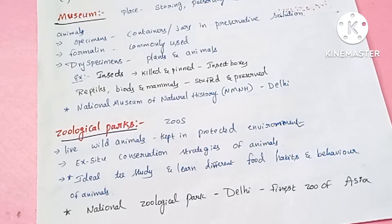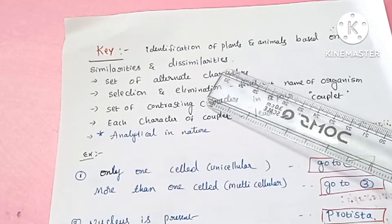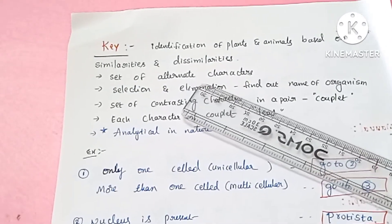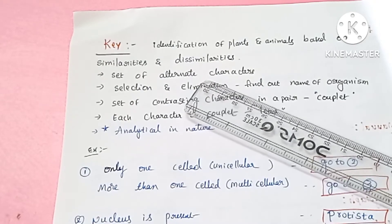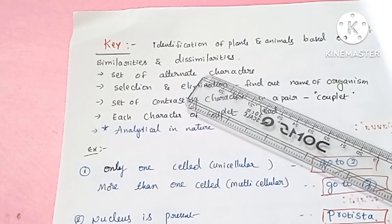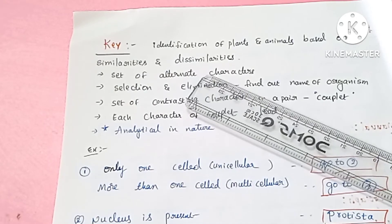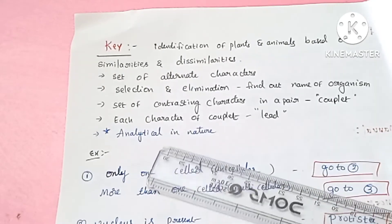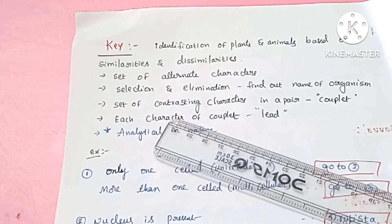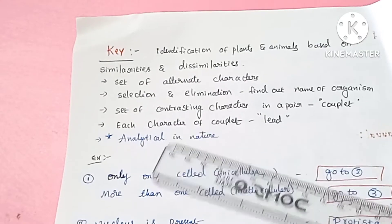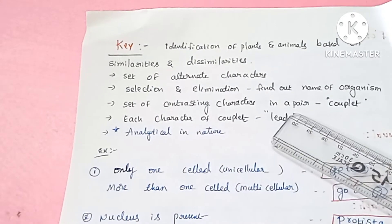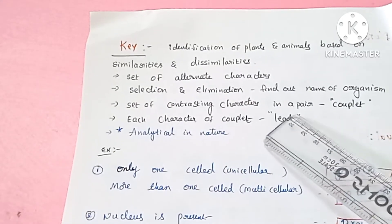Zoological parks are ideal for studying the food habits, behavior, and morphology of animals. The next taxonomical aid is the Key, used for identification of plants and animals based on similarities and dissimilarities. Keys use alternate or contrasting characters that exist in the form of a pair.